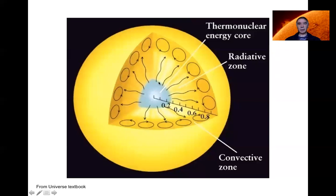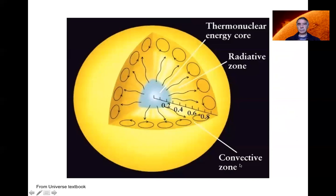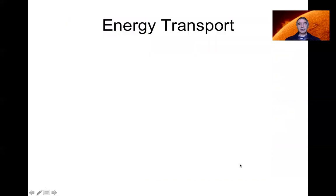Let's now move on to ask what happens to that energy generated in the thermonuclear core. Mostly high-energy gamma rays — high-energy photons — come out of the center, heating the gas to 10 million kelvin. How does that energy get transported to the surface, resulting in the visible surface of the sun that we see shining today?